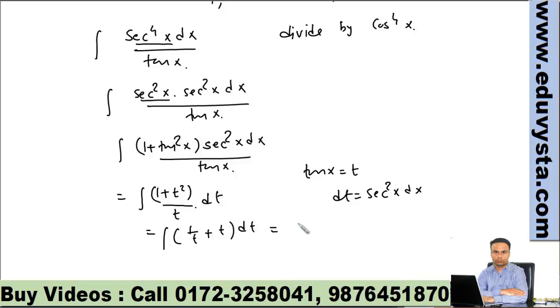1 upon t integral is log of t, and integration of t is t squared by 2 plus c, where t is equal to tan x.